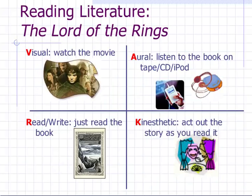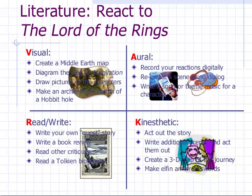This slide deals with the different ways students learn literature. Visual students could watch the movie. Aural students could listen to the book on tape, CD, or iPod. Read-write learners could just read the book. Kinesthetic learners could act out the story as it is read.